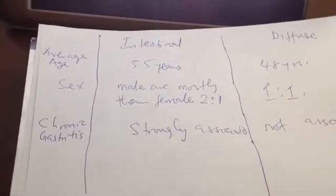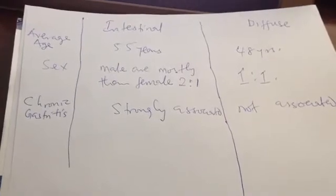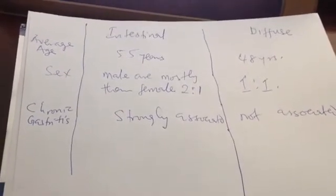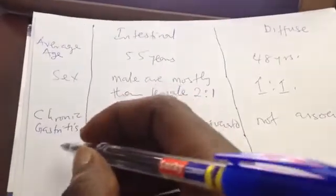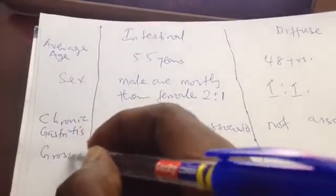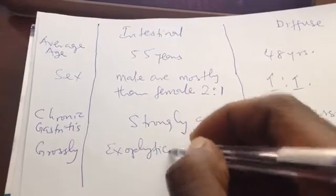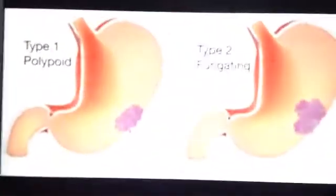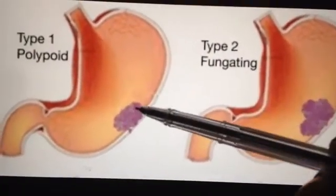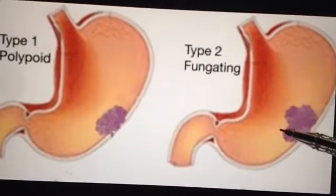Most importantly, they are also differentiated based on gross appearance and microscopic appearance. The microscopic appearance is the most important — when you take a biopsy, that is the definitive way of diagnosing and differentiating any cancer. Grossly, the intestinal type appears as an exophytic or fungating, polypoid growth — this is its gross appearance.